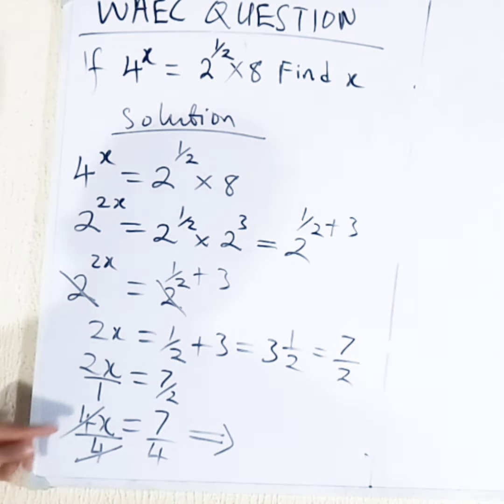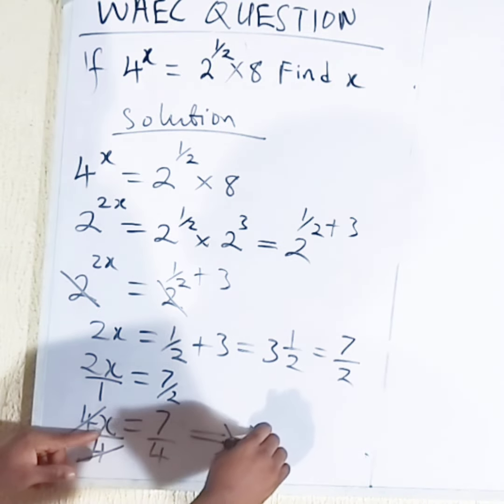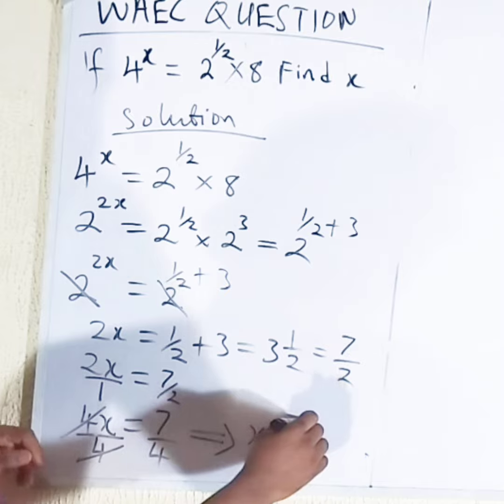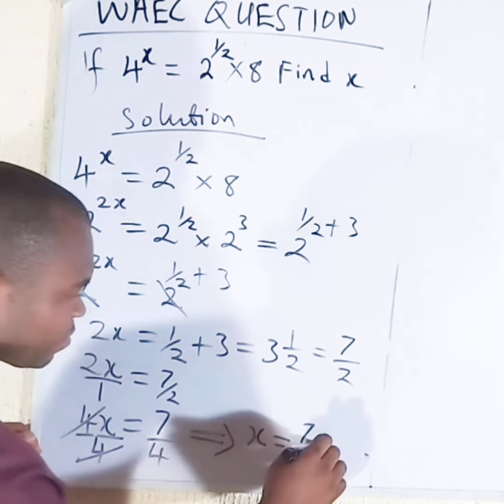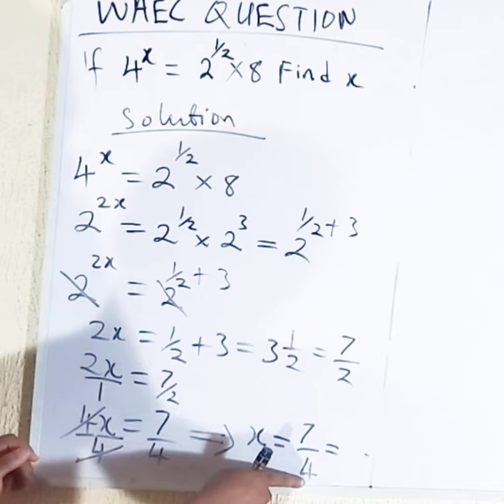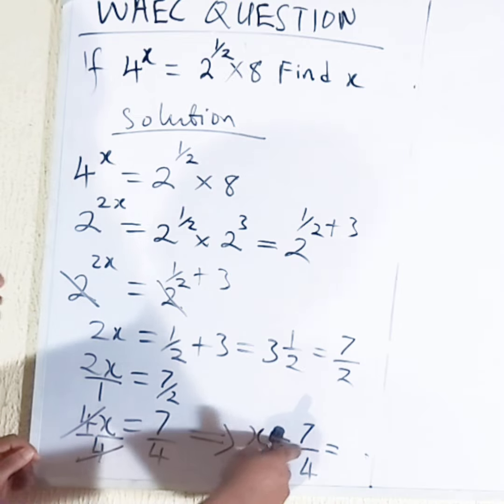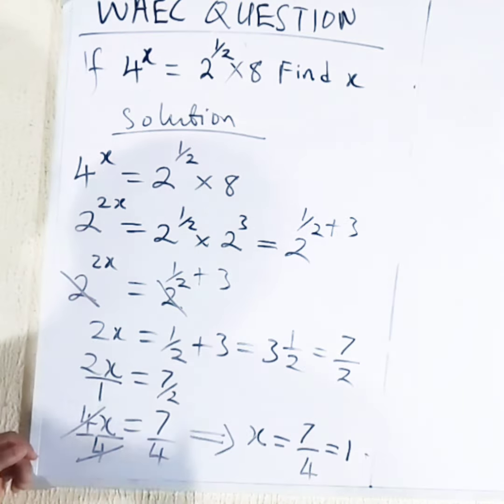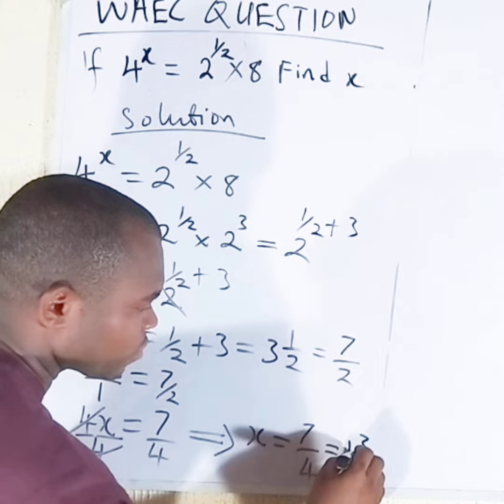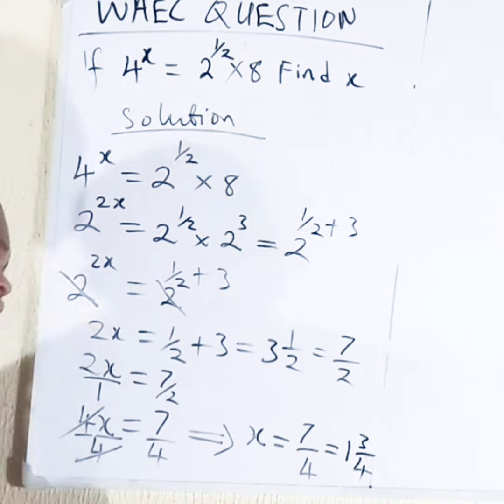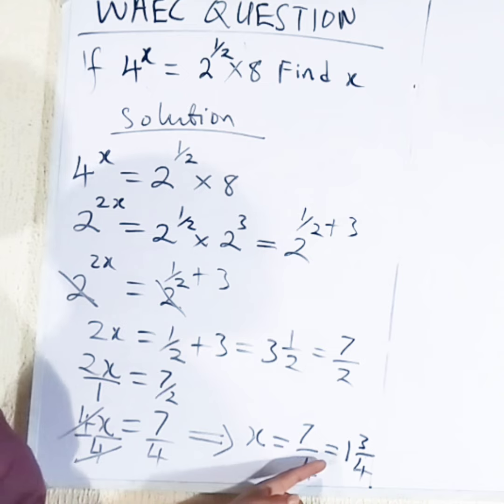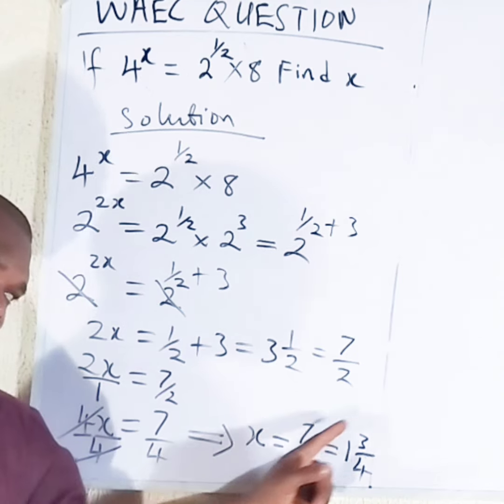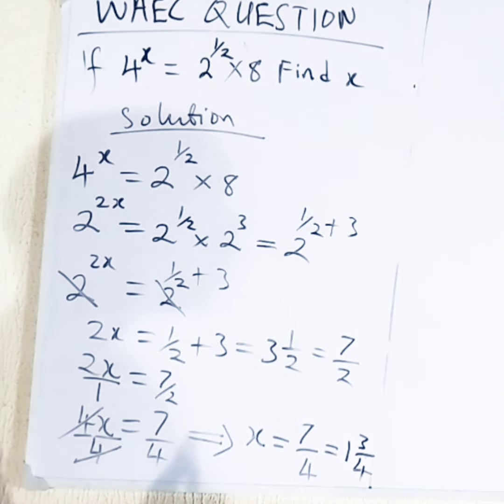The final answer will be x is equal to 7 over 4, which can be written as 4 divided by 7, so we get 1 remainder 3. So the answer is x is equal to 7 over 4, or one whole number 3 over 4. And that is the answer.